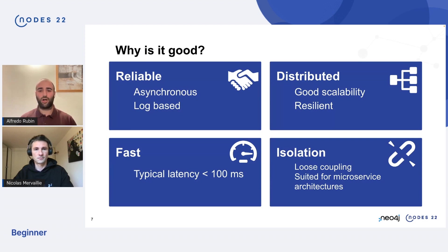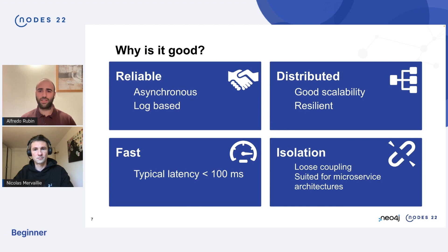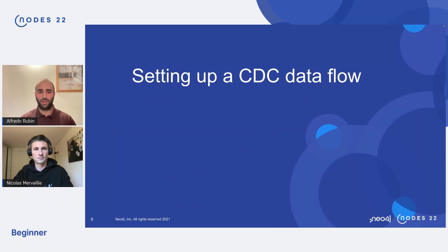This architecture offers great isolation because it helps achieve loose coupling by removing the responsibility from each microservice to talk directly with each other, relying instead on Kafka itself. So let's take a quick look at an example of how to set up a CDC data flow.